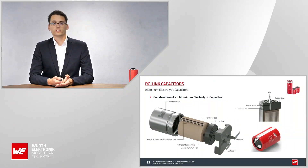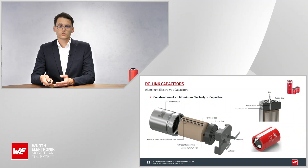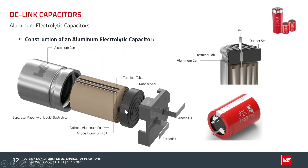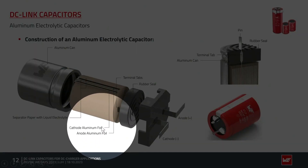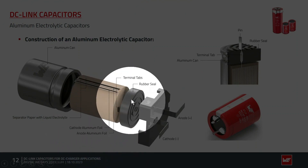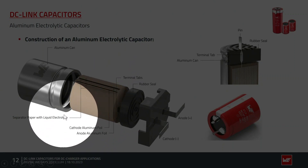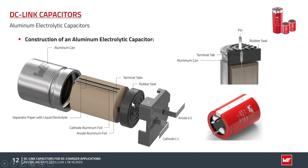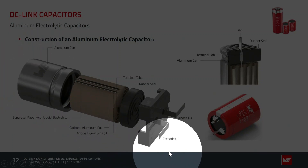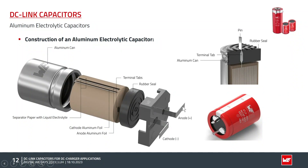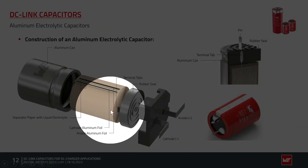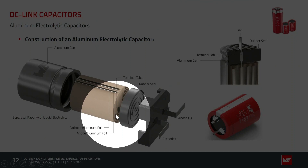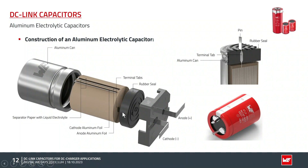Now let's talk about aluminum electrolytic capacitors. Starting with the construction: we have the cathode foil, the anode foil above it, the separator paper with liquid electrolyte in between, and a rubber seal to protect the inner winding from drying out. The capacitor shown here is an SMT type, but the inner structure of a snap-in capacitor is comparable — a little different because more terminal taps are used in some capacitors to reduce ESR.